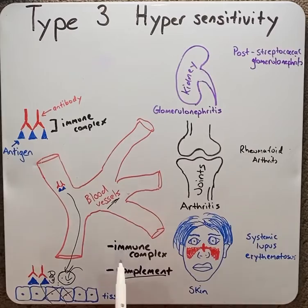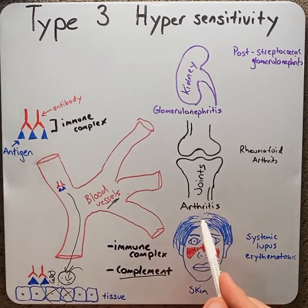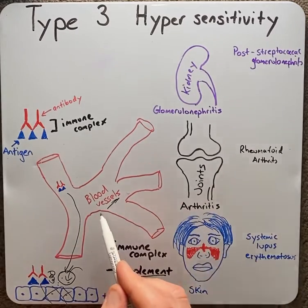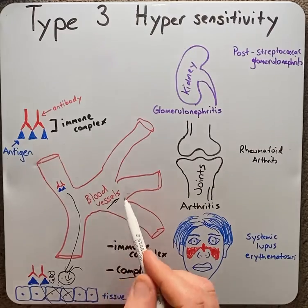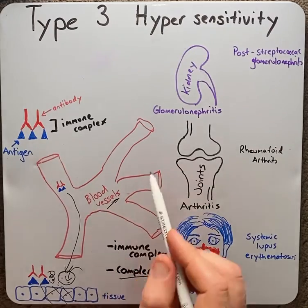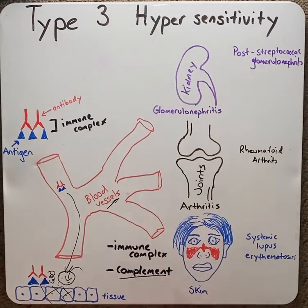Or serum sickness, which can get stuck in the joints causing arthritis, in the blood vessels causing vasculitis, or in the kidneys causing nephritis.